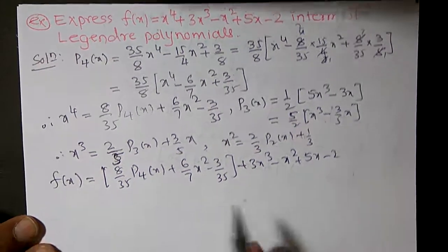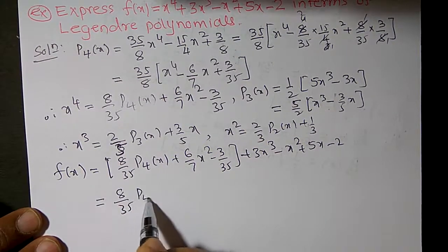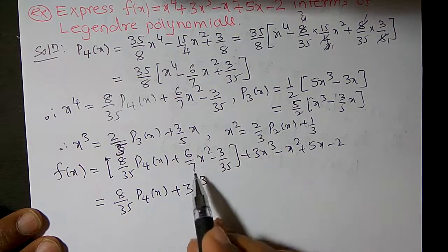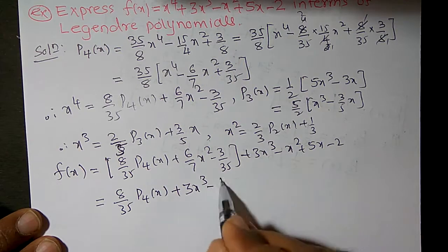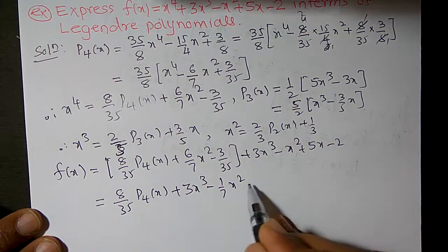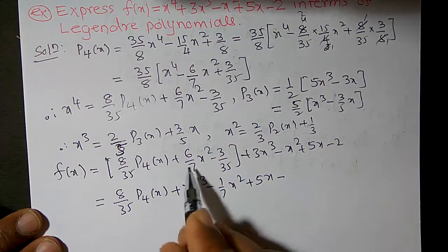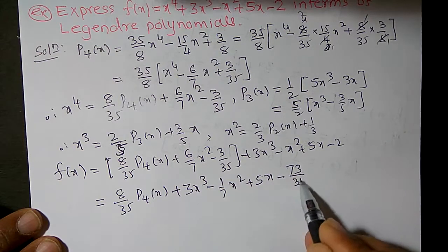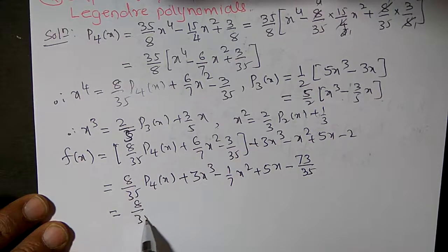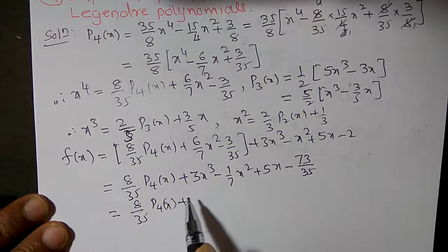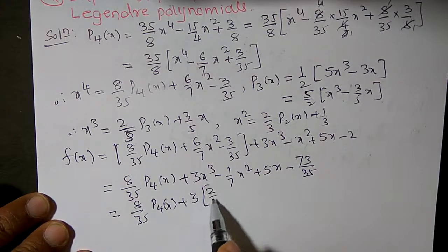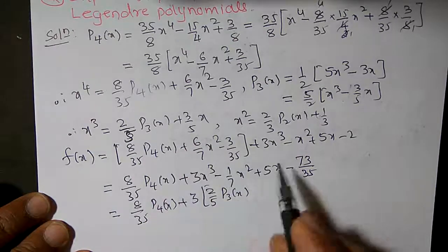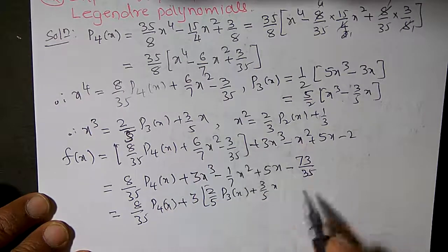Simplifying: (8/35)P4(x) + 3x³ + [(6/7) - 1]x² + 5x - 2 - 3/35. The x² coefficient simplifies to -(1/7)x². Now substituting x³ = (2/5)P3(x) + (3/5)x, so 3x³ = (6/5)P3(x) + (9/5)x.